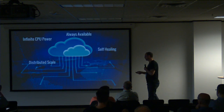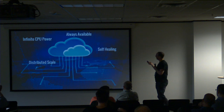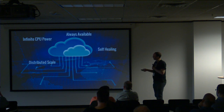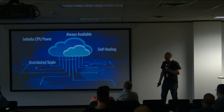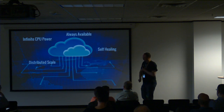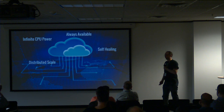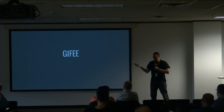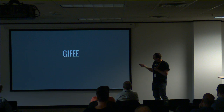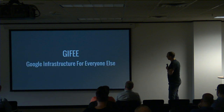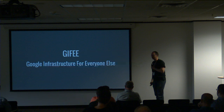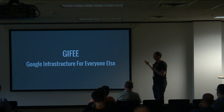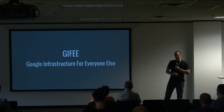This cloud OS has some interesting attributes: self-healing, always available, you never run out of CPU power, you can scale and scale and scale, distribute, fault tolerant. It's like taking Linux and throwing it into the cloud. The industry has started to coin the acronym GIFEE — Google Infrastructure For Everybody Else. They've had the cloud operating system for years, and they've taken that knowledge and started to share it with us, giving us Kubernetes to try and make that happen.